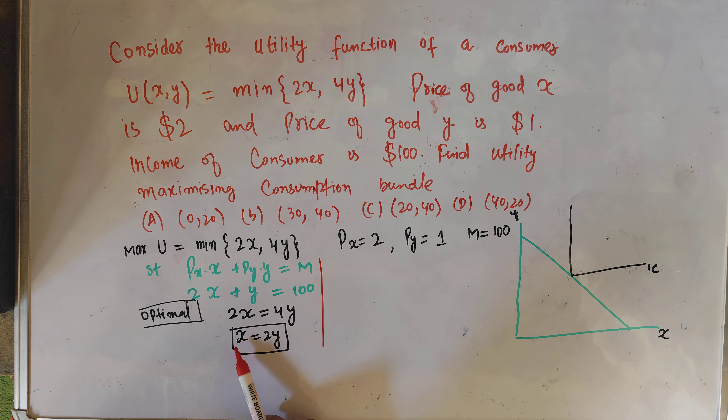We plug the value x = 2y into the budget constraint. So we have 2 times 2y plus y equals 100, which gives us 4y plus y equals 100, or 5y equals 100. Dividing both sides by 5, we get y equals 20. If y = 20, then x = 2 times 20, so x = 40. We consume 40 units of good x and 20 units of good y to maximize utility.